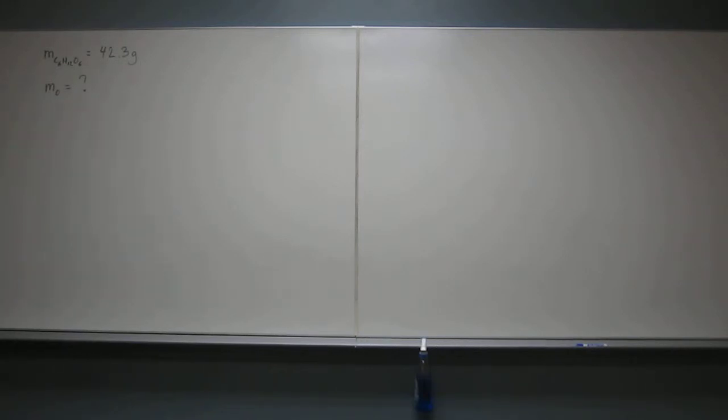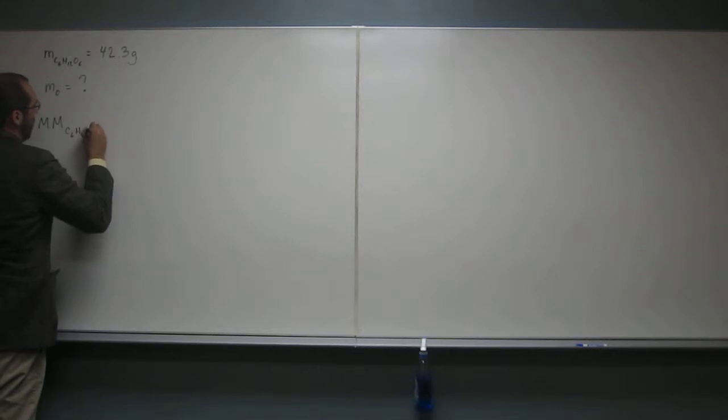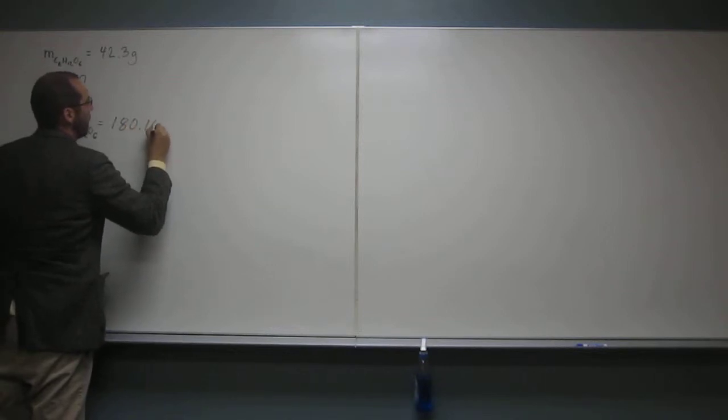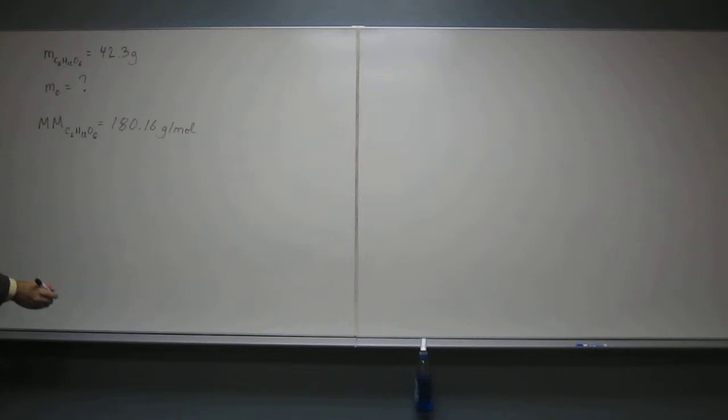Okay, so this is the stuff that's given to you. Remember, the first thing we need to do is find the molar mass of C6H12O6. So when we do that, you found it earlier, right? It was 180.16 grams per mole, right?